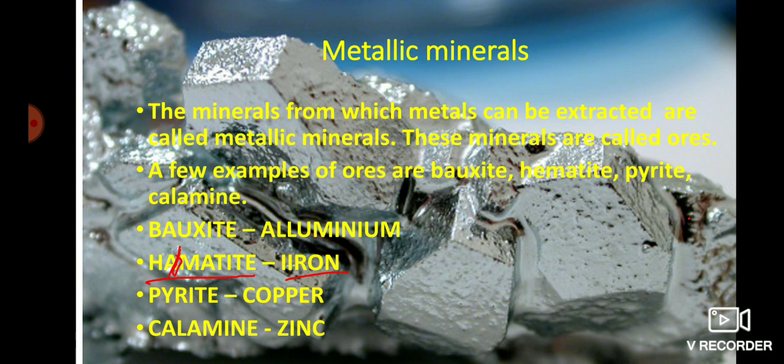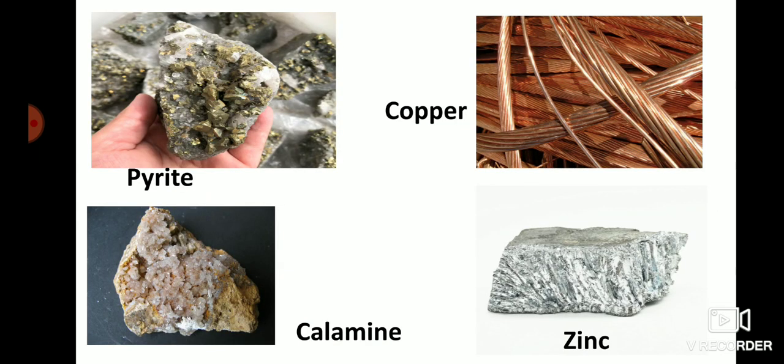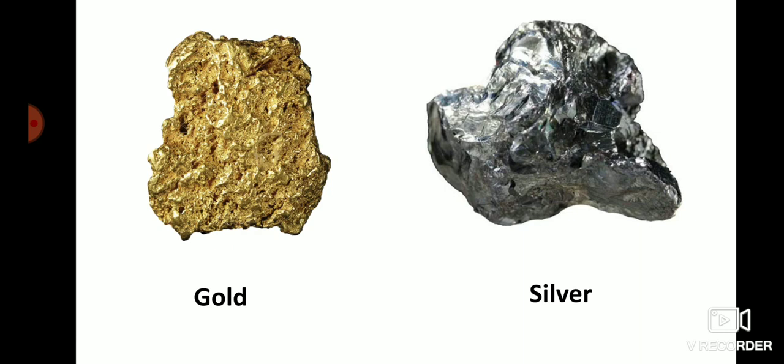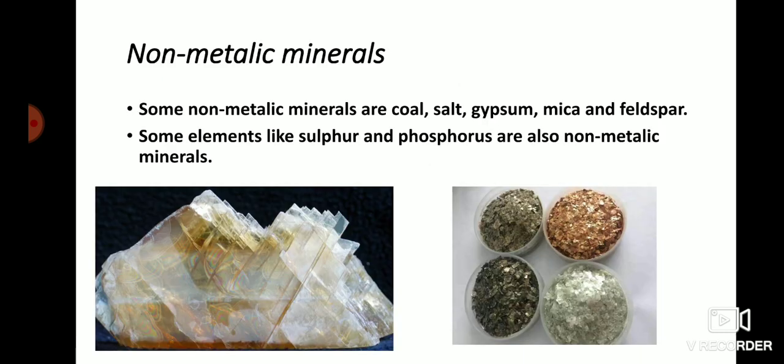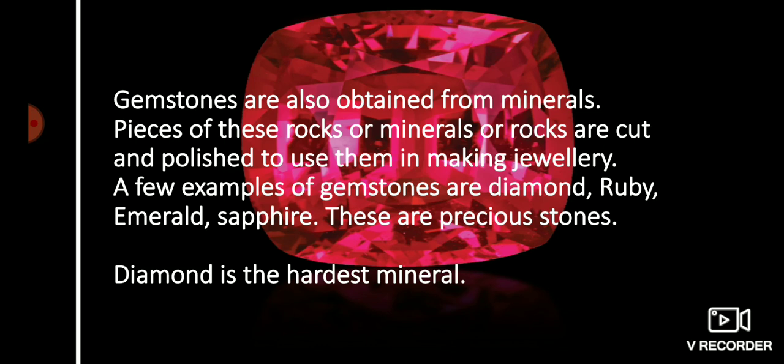From metallic minerals we get iron, aluminium, copper, zinc, gold, silver, etc. From non-metallic minerals we get gypsum, mica, feldspar, sulfur, phosphorus, etc. We also learned about gemstones. Thank you for watching this video. Next day we will learn about coal and petroleum.